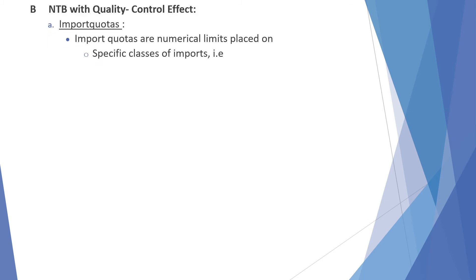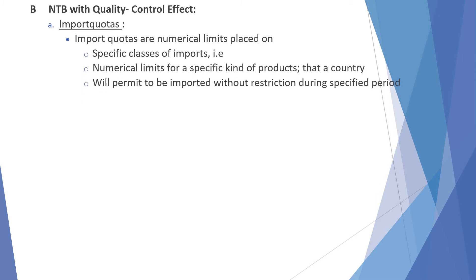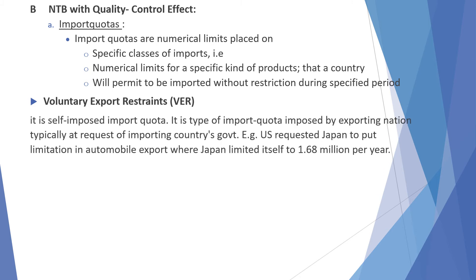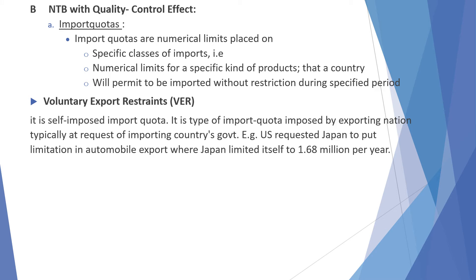Non-tariff barriers with quality control effect: import quotas are numerical limits on specific classes of imports — a numerical limit to a specific kind of product that a country will permit to be imported without restriction during a specified period. Next is voluntary export restraint (VER), which is a self-imposed import quota — a type of import quota imposed by exporting nations, typically at the request of importing countries.